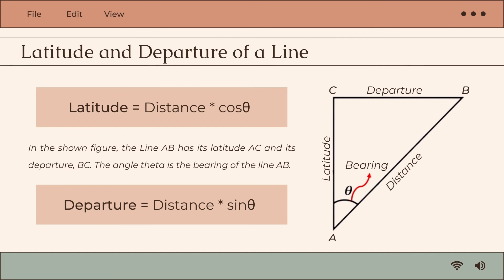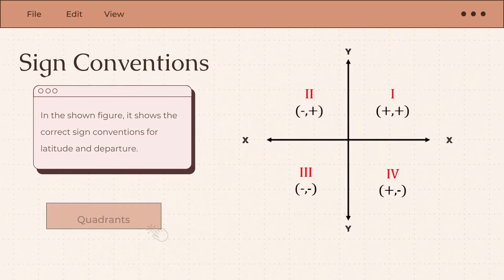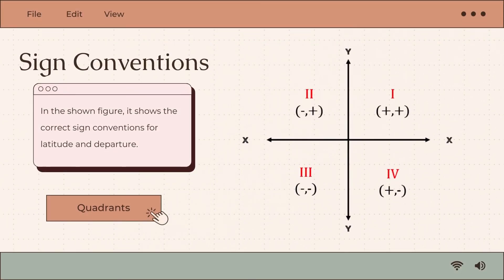The formula for latitude is: latitude equals distance multiplied by cosine theta. In the figure shown, it shows the correct sign conventions for latitude and departure. In the first quadrant, both latitude and departure are positive.